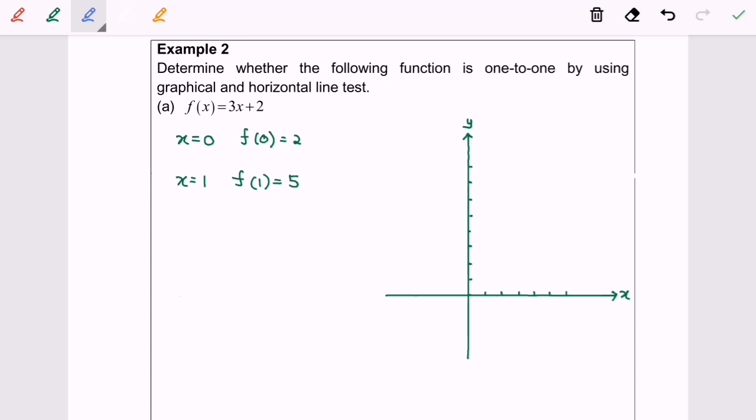We are going to plot these values. When x equals 0, y equals 2, so here we have the point (0, 2). When x equals 1, y equals 5, so we have the point (1, 5) here.